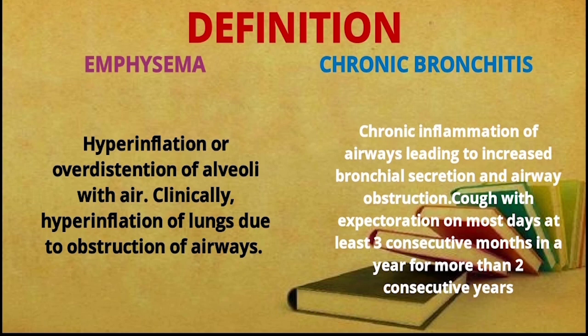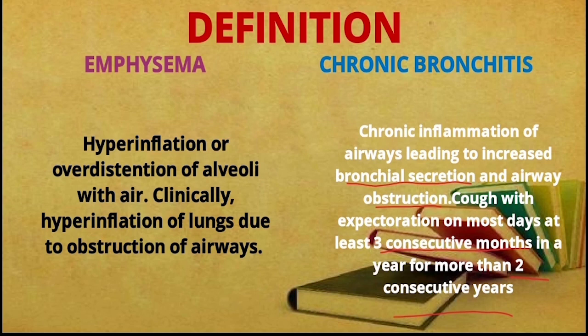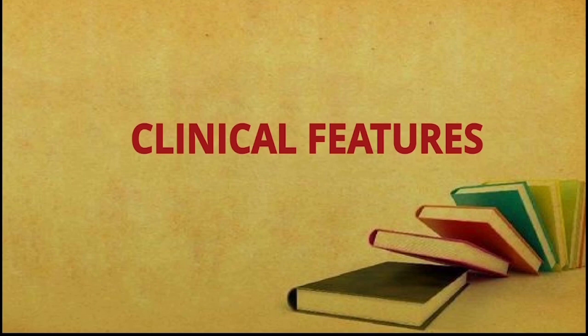Chronic bronchitis is the chronic inflammation of the airways leading to increased bronchial secretion and airway obstruction. Clinically, this is seen as cough with expectoration of sputum on most days for at least three consecutive months in a year, for more than two consecutive years.